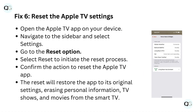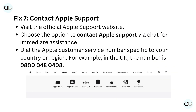Fix 6: Reset the Apple TV settings. Open the Apple TV app on your device. Navigate to the sidebar and select settings. Go to the reset option and select reset to initiate the reset process. Confirm the action to reset the Apple TV app. The reset will restore the app to its original settings, erasing personal information, TV shows, and movies from the smart TV.